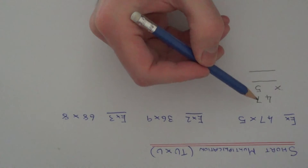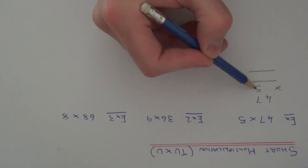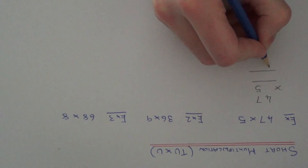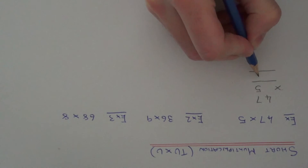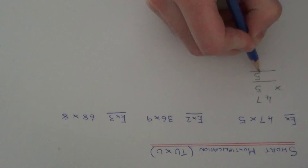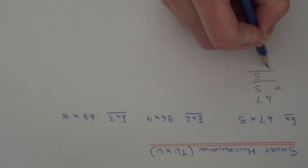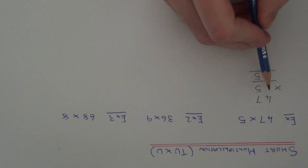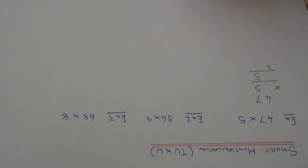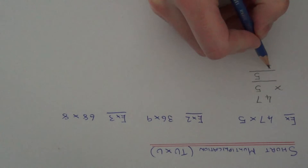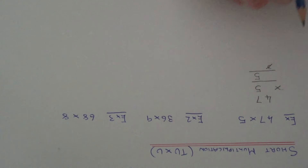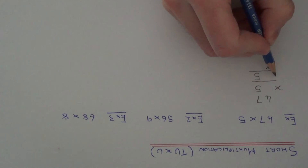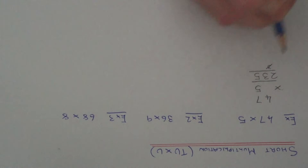First of all we need to work out 7 times 5, that gives us 35. So we write the last digit there and put the 3 into the tens column. Then we need to work out 4 times 5, that's 20, but we need to add on the 3 which we carried underneath to give us 23. So our final answer is 235.